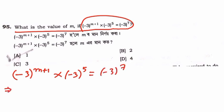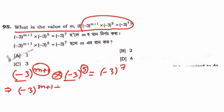I am going to write the base. The base is the same on both sides. So I am going to write: m plus 1 plus 5 is equal to 7, since the bases are equal — both are minus 3. Therefore, the left side base equals minus 3 to the power 7.